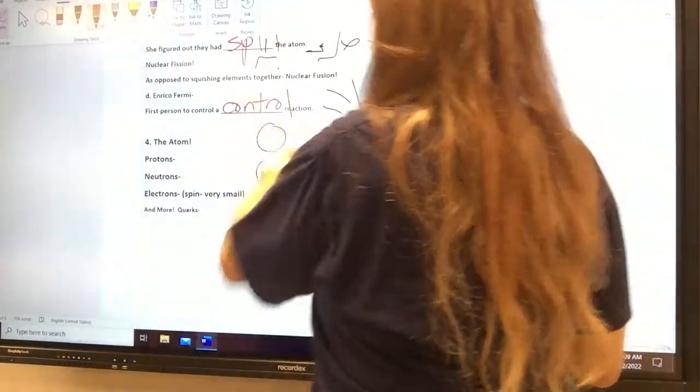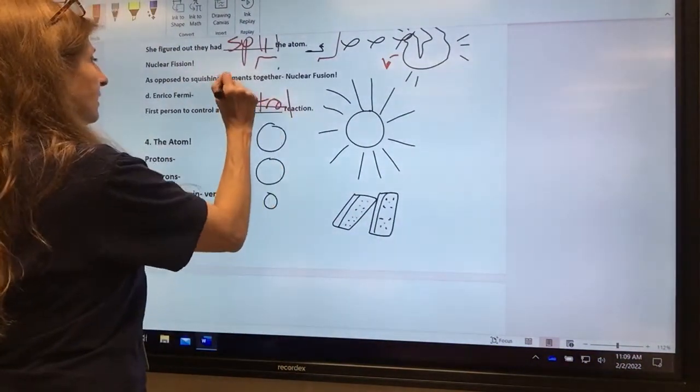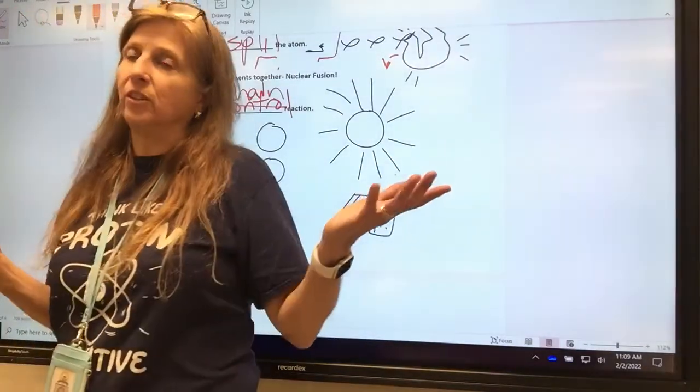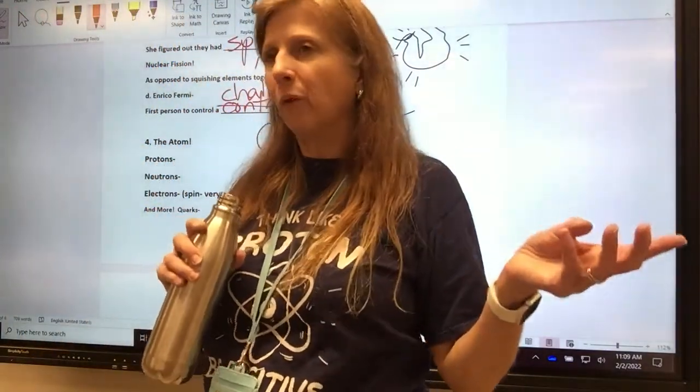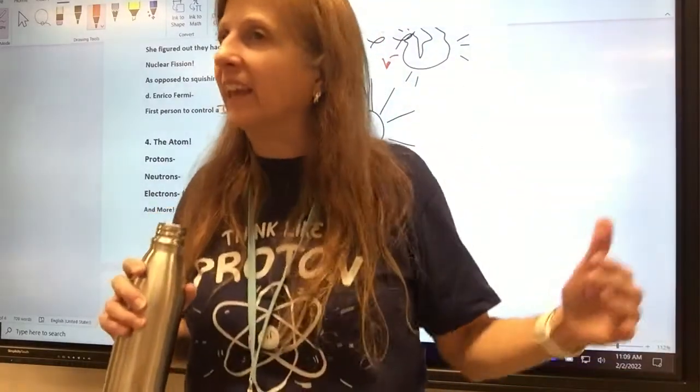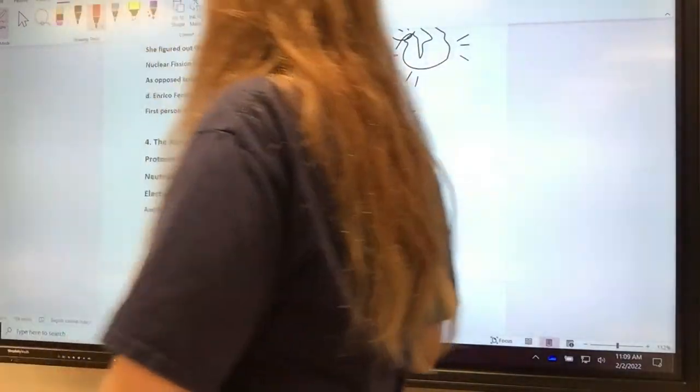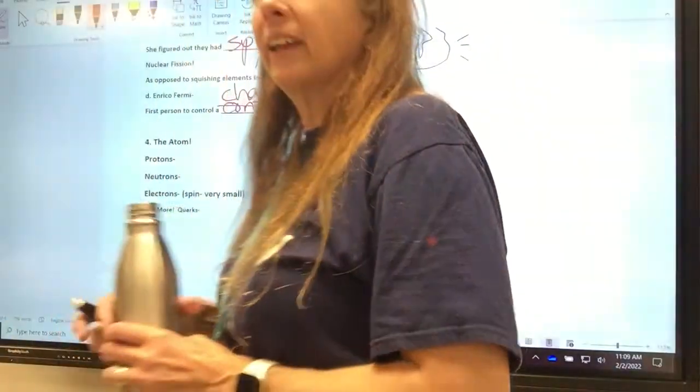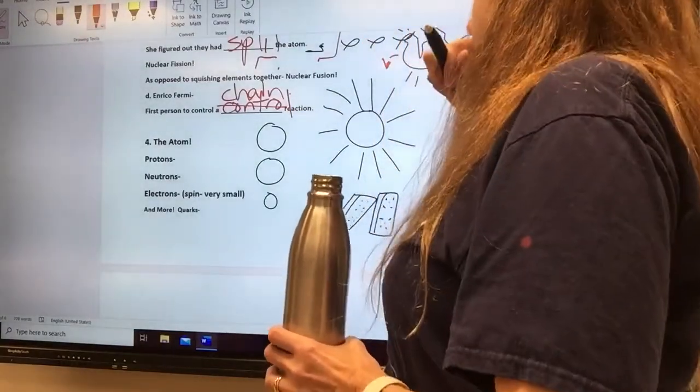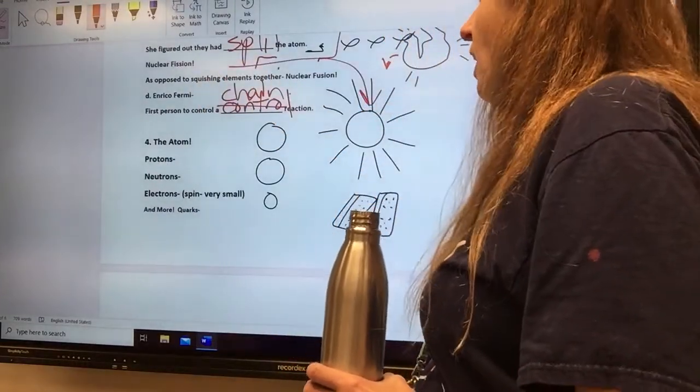And he was right. Right now, if you follow the news, Iran is trying real hard to get a bomb. What do they want to do with it? Blow up Israel. They say, no Jews from the river to the sea. They want to kill all the Jews in Israel. So he was right that they're trying to get a bomb, and that's what it's for. The sun is nuclear fusion. It's what powers the sun and other stars.